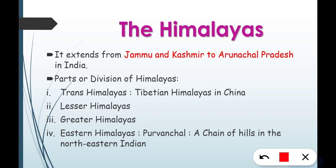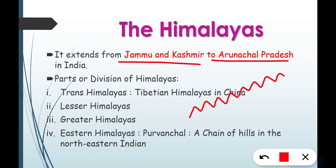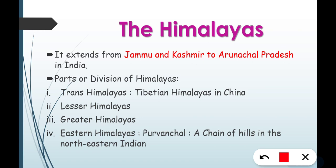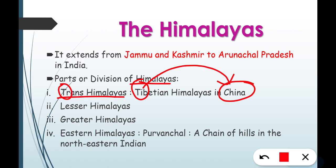About the Himalayas — their extension stretches from Jammu & Kashmir to Arunachal Pradesh. Parts of division: Trans-Himalayas are in Tibet/China — T for Trans, T for Tibetan, located in China-occupied territory. Then there are Lesser Himalayas, Greater Himalayas, and Eastern Himalayas which start from Purvanchal.